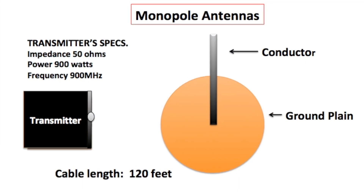Monopole antennas are very simple but effective. They were developed in the early 20th century around 1901, and were primarily used for maritime and military applications. Today, we use monopole antennas for AM and FM radio, TV broadcasting, two-way maritime aviation, plus cellular communication, Wi-Fi, and Bluetooth.